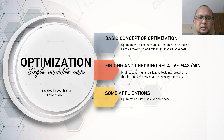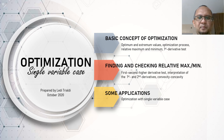Assalamualaikum warahmatullahi wabarakatuh. Hi again. This is the second presentation about optimization with the single variable case. Having understood the basics as well as the use of the first and second derivative test in the optimization process, we shall continue by examining further the interpretation of each of the derivatives. I will end my presentation after explaining all the conditions needed in performing optimization without constraint with single variable case. We will be talking about applications in my third video presentation.